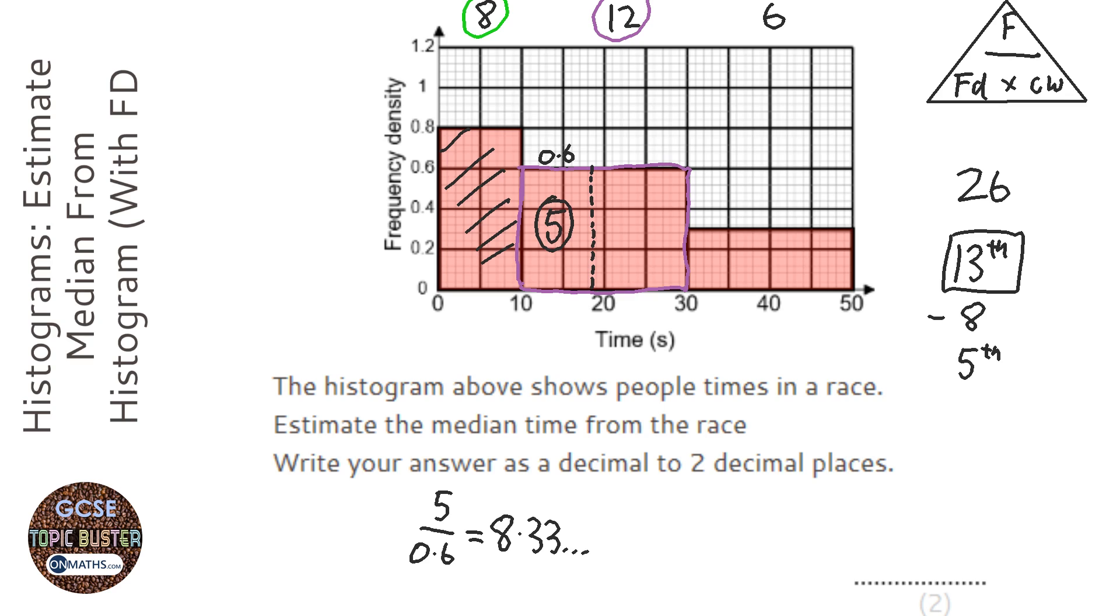Now the class width already started at 10, so it's 8.33 more than 10. I need to do 10, which is the time at which it started, plus 8.33 recurring, which is going to be 18.3 recurring.